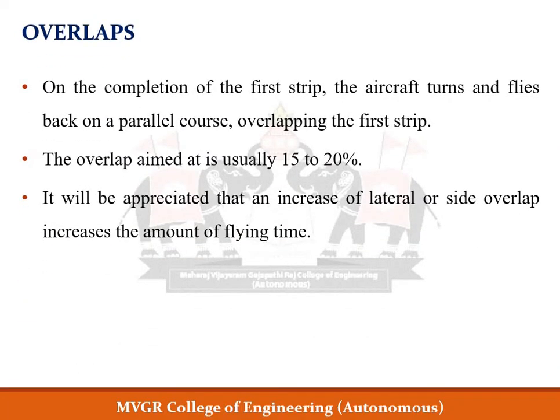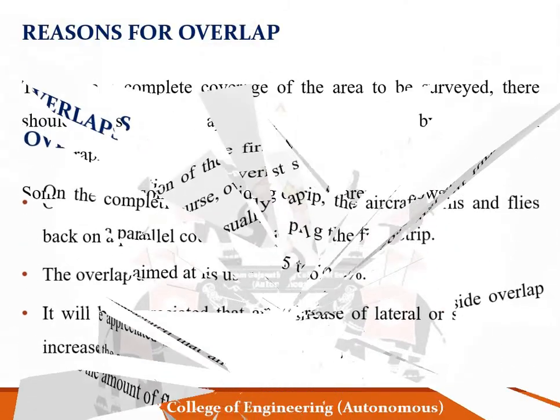Once the first strip is completed, the aircraft turns and flies parallel to the first line. Then there exists side overlap or lateral overlap, generally fixed at 15 to 20 percent or 20 to 40 percent, around 30 percent. The area must be covered without any gaps, which is why side overlaps are maintained.